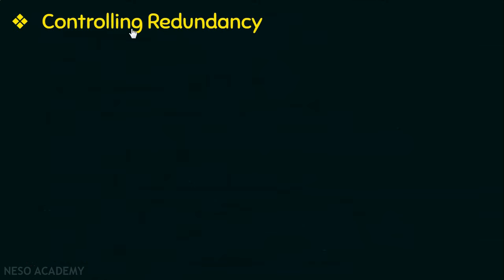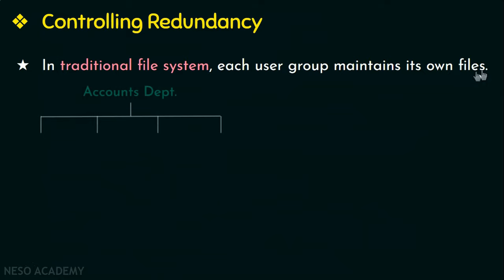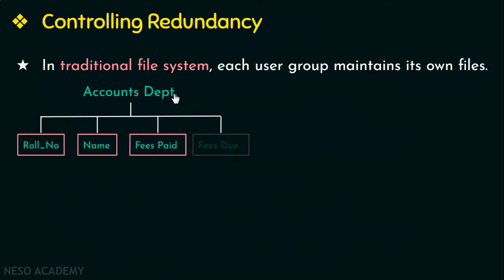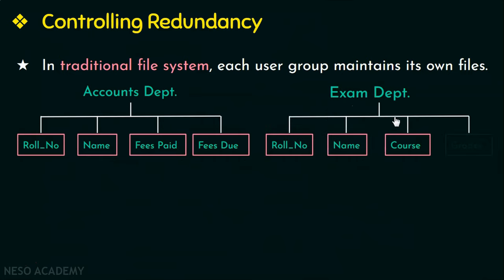The first advantage is controlling redundancy. In the traditional file system, each user group maintains their own files. Consider a university database with two user groups: the accounts department that keeps track of fee details, and the exam department that keeps track of the grades received by the student in each course.